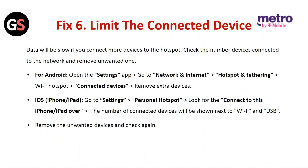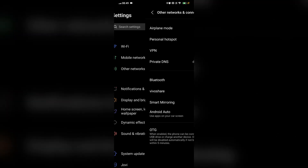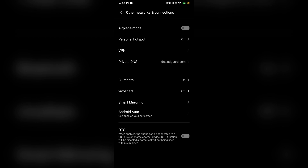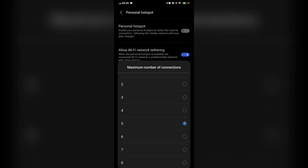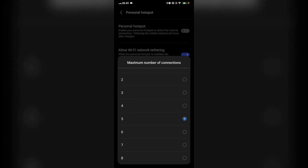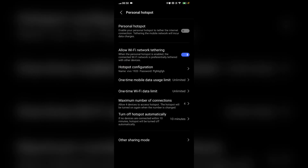Fix six: limit the connected devices. Data will be slow if you connect more devices to the hotspot. Check the number of devices connected to the network and remove unwanted ones. For Android, open the Settings app, go to Network and Internet, then Hotspot and Tethering, then Wi-Fi Hotspot. Select Connected Devices and remove the unwanted devices.